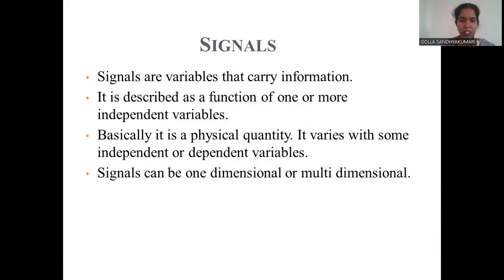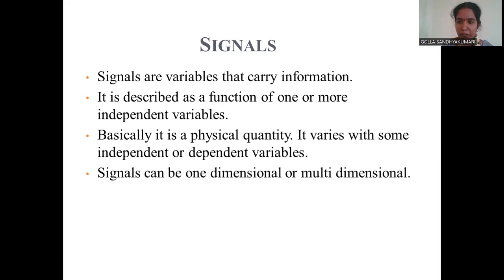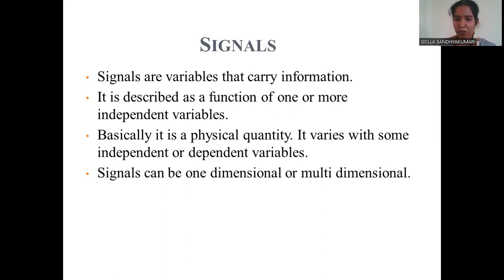Signals are variables that carry information. Signals are represented with basic parameters like amplitude, frequency, and phase with respect to time. A signal is defined as a set of one or more independent variables, and can represent a physical quantity with respect to time, amplitude, frequency, and phase, where it varies with some independent variables.